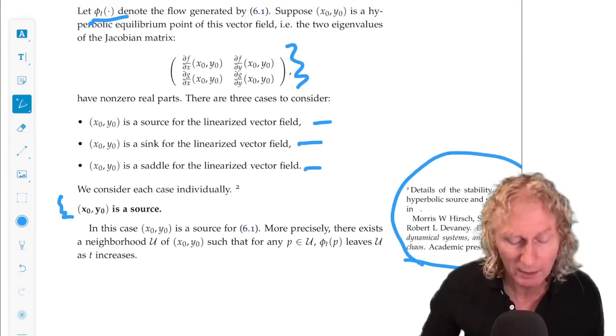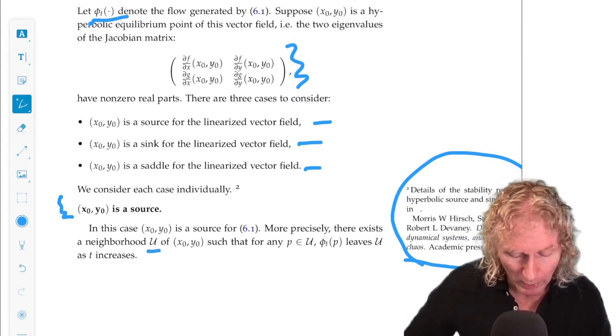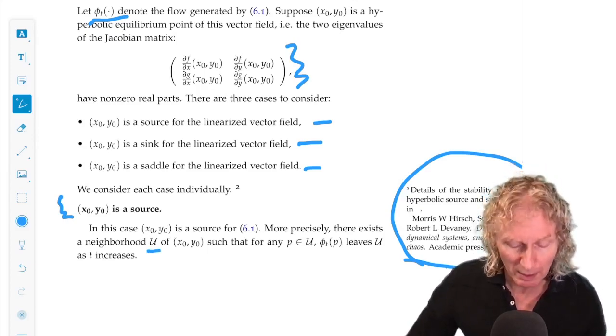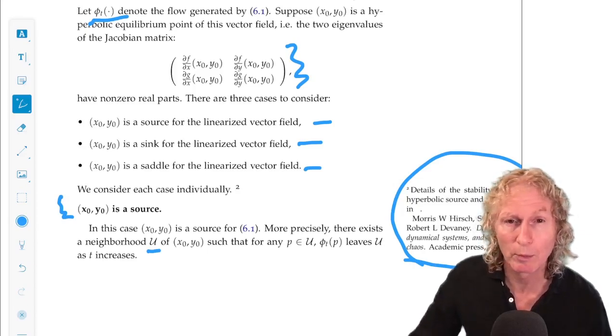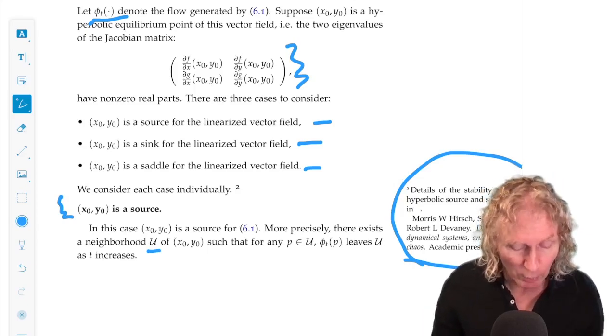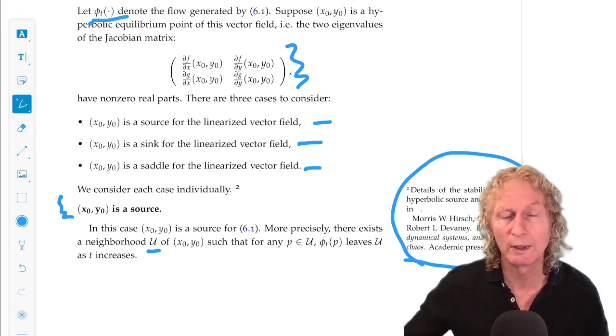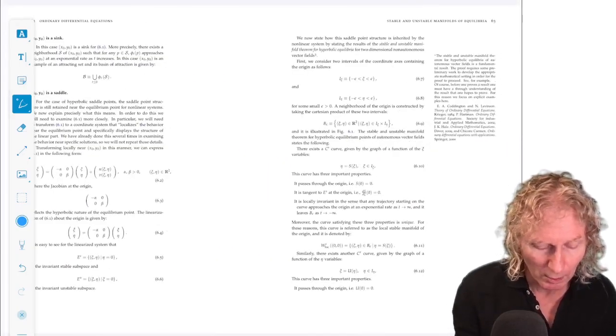So, what that means is there exists a neighborhood, I call it script U of the point, such that for any point in that neighborhood, phi_t of p, the trajectory through p, leaves that neighborhood as t increases. So, a source. You leave the neighborhood of the equilibrium point.